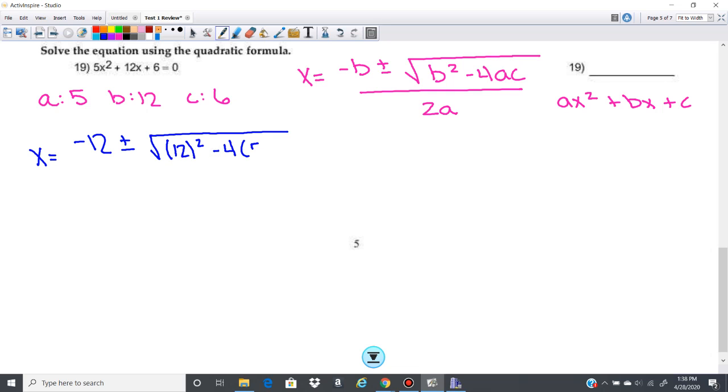minus 4 times a, which is 5, times c, which is 6, over 2 times a, which is 5.